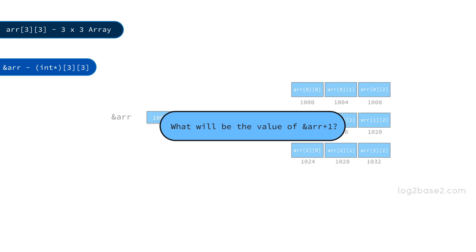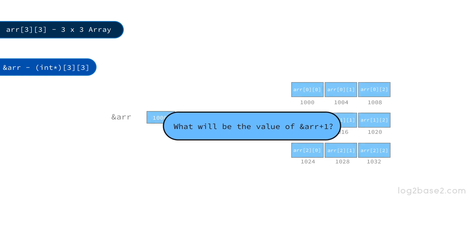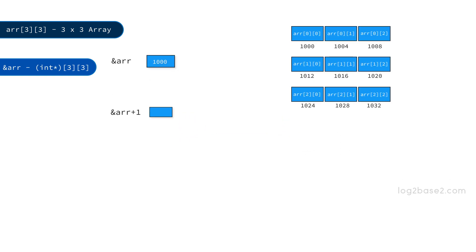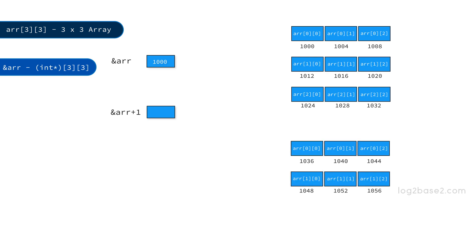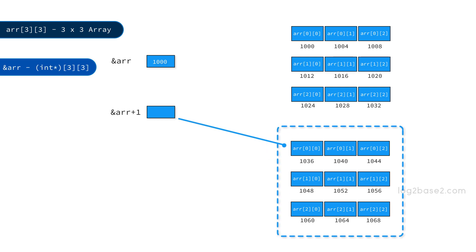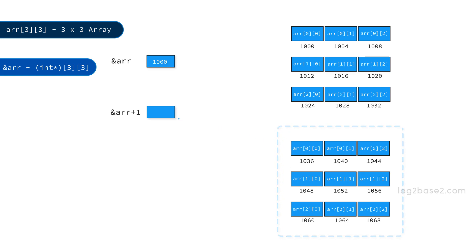What will be the value of &ARR + 1? If we move a single integer pointer, it will point to the next variable's memory address. But here, &ARR points to the whole 3x3 2D array. So if we move &ARR by one position, i.e. &ARR + 1, it will point to the next 3x3 2D block. The address of the next 3x3 2D block is 1036, so &ARR + 1 will be 1036.